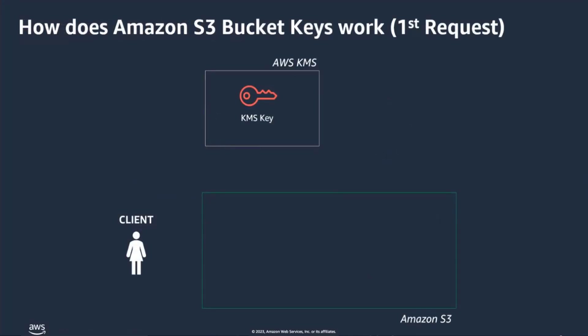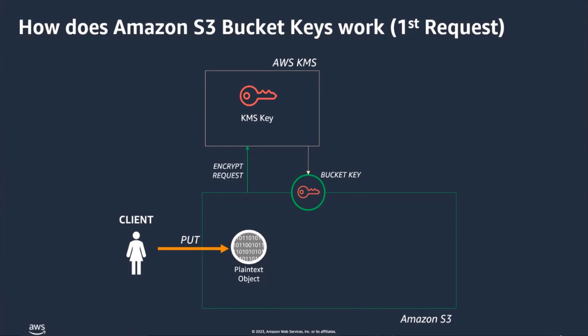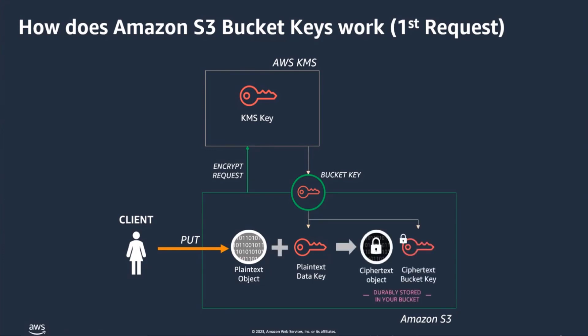If you choose to encrypt your object using S3 bucket keys, AWS KMS and Amazon S3 perform the following encryption actions. First, upon uploading your object and selecting S3 bucket keys, S3 will call AWS KMS to generate a short-lived bucket-level key. This bucket-level key is encrypted via your specified KMS key. This short-lived bucket-level key will generate a plain text data key to encrypt your object. Amazon S3 encrypts the object using the plain text data key and removes it from memory as soon as possible after use. Finally, Amazon S3 stores the encrypted bucket-level key as metadata with your encrypted object.